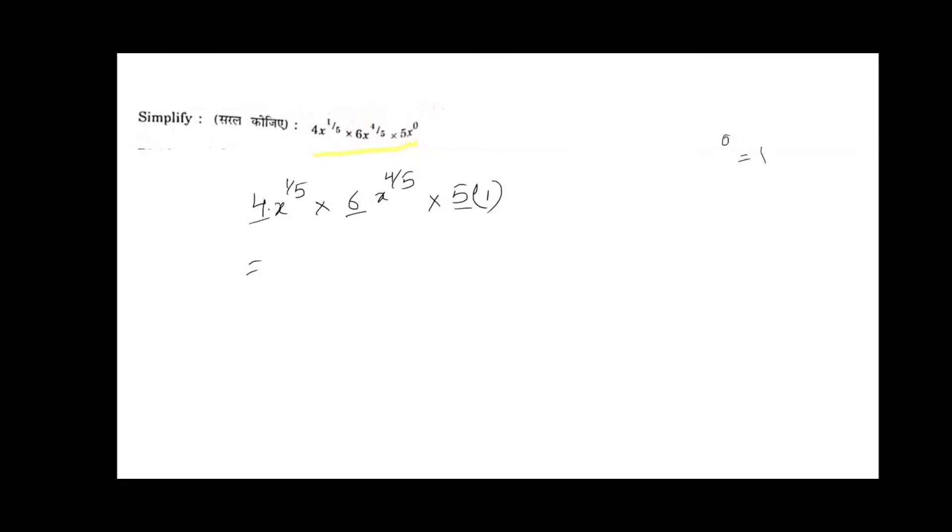Now 4, 6, 5 are the coefficients. We can multiply separately which gives 120. And x power 1 by 5, x power 4 by 5 have the same basis.